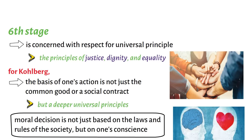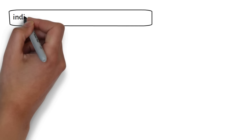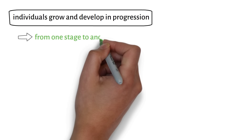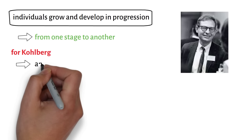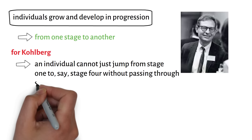As already noted, individuals grow and develop in progression, that is, from one stage to another. It is important to note that for Kohlberg, an individual cannot just jump from stage one to, say, stage four without passing through stages two and three. Thus, for Kohlberg, one's moral development is linear and is ordered hierarchically.